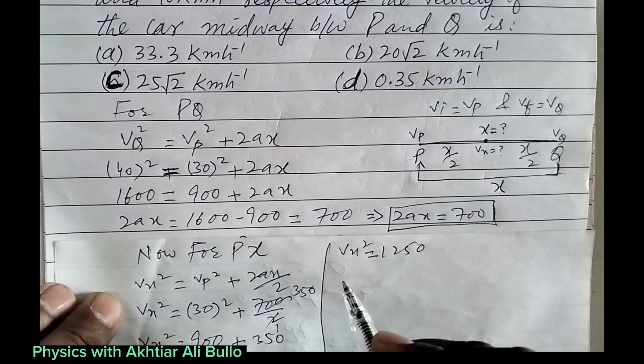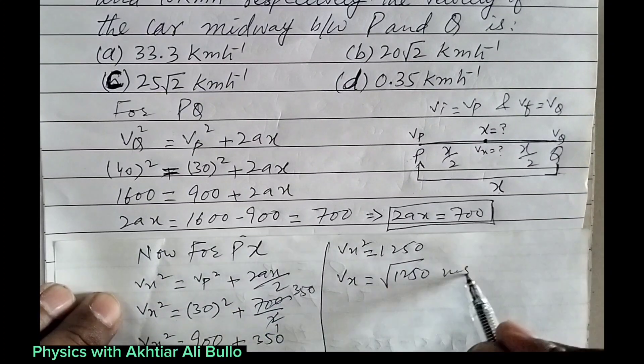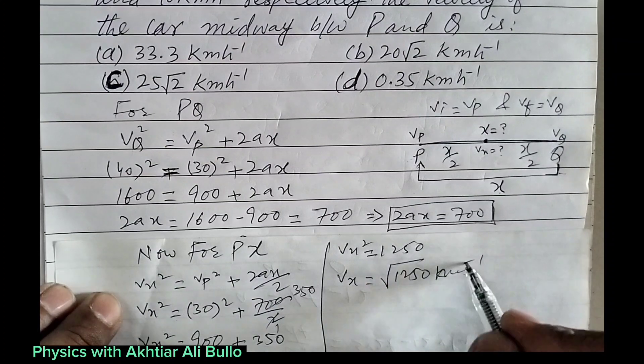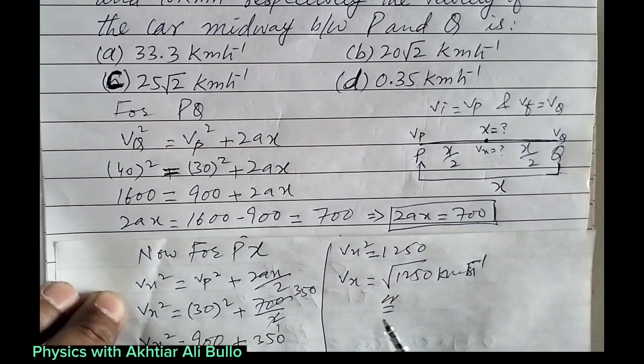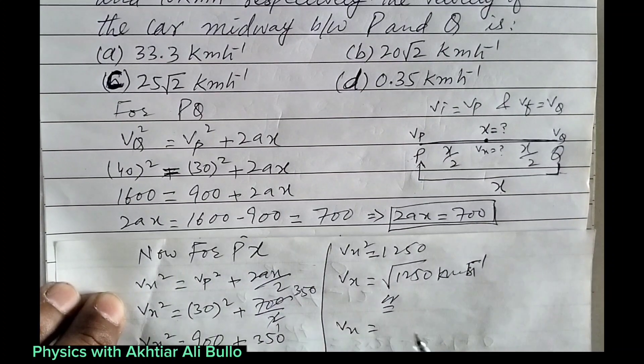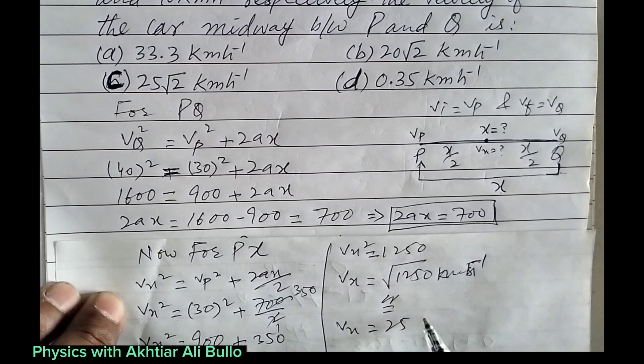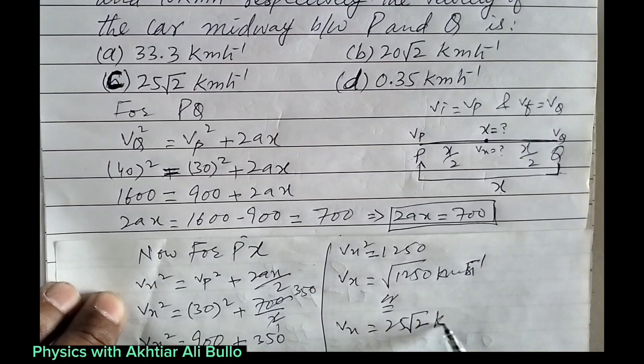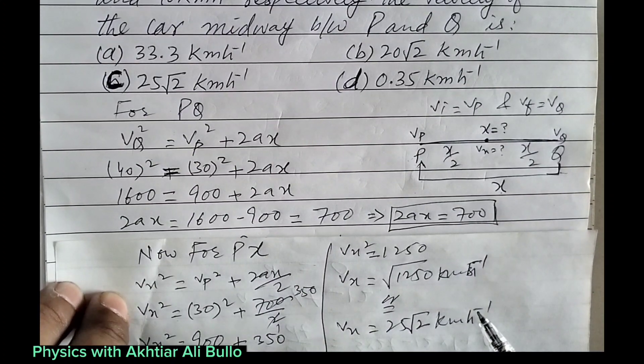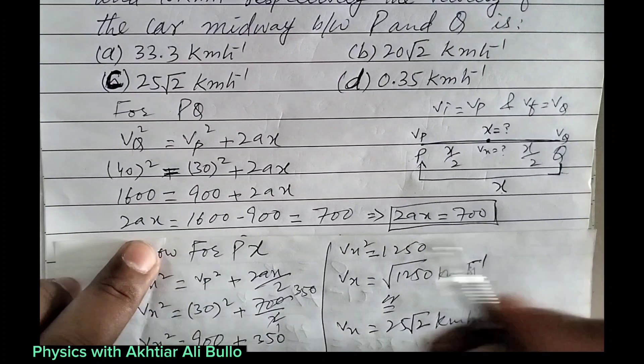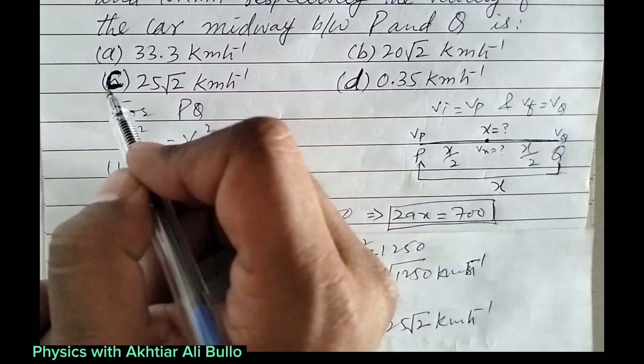Vx will be equal to √1250 kilometers per hour. We can also write it as Vx = 25√2 kilometers per hour. So the correct option will be C: 25√2 kilometers per hour.